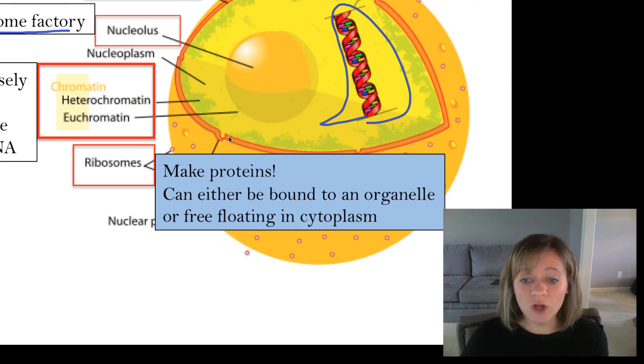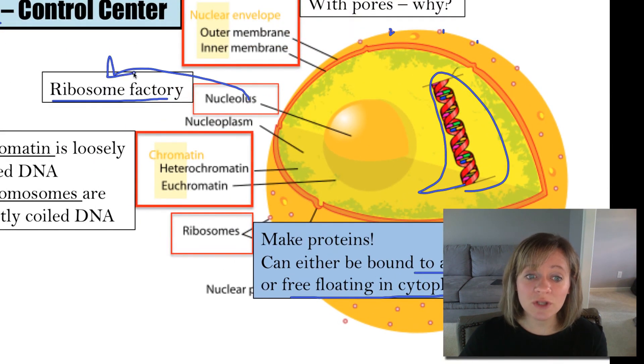On the nuclear envelope, we have ribosomes. Ribosomes are what make every single one of your proteins in your body. Now, ribosomes can either be bound to an organelle, like it's bound to the nuclear envelope, or it could just be free-floating in the cytoplasm. So remember, the nucleolus makes ribosomes, and the ribosomes make proteins.